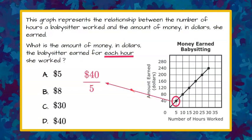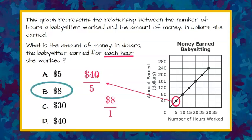So we are going to write that as a rate — that ordered pair can be written as $40 in 5 hours. We use our graph: amount earned is our Y and hours worked is our X, so this ordered pair is (5, 40) — 5 hours, $40. Our ratio or rate of $40 in 5 hours we can simplify because 40 divided by 5 is 8, so we know that she makes $8 in one hour.